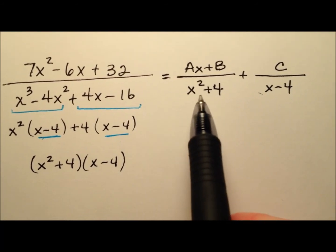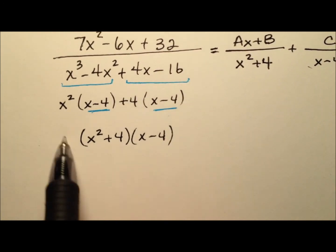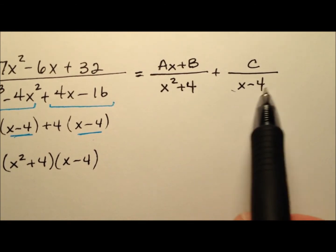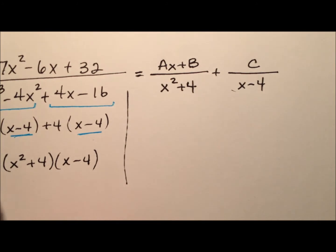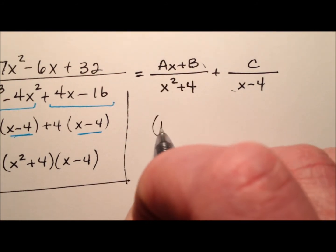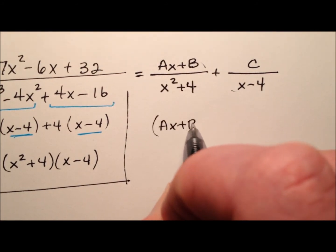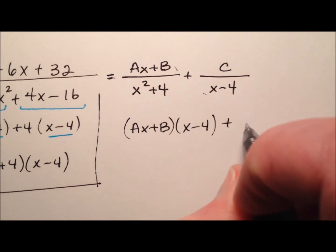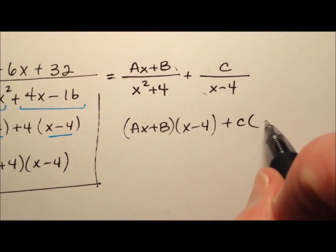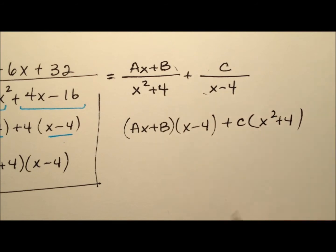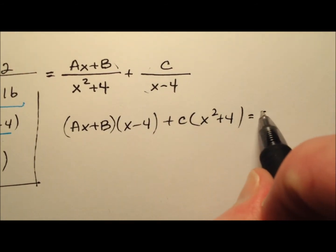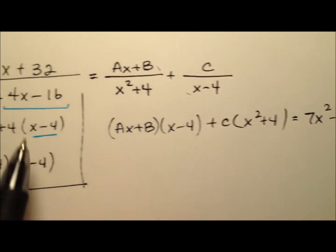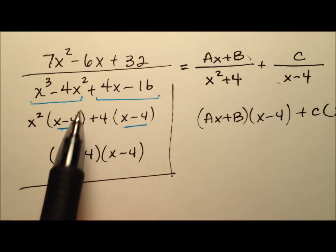Now, knowing the common denominator is x squared plus 4 times x minus 4, each fraction is missing one factor. The ax plus b fraction is missing x minus 4, so we multiply by that. The c fraction is missing x squared plus 4, so we multiply by that. And all of that equals 7x squared minus 6x plus 32 from the original rational expression's numerator.